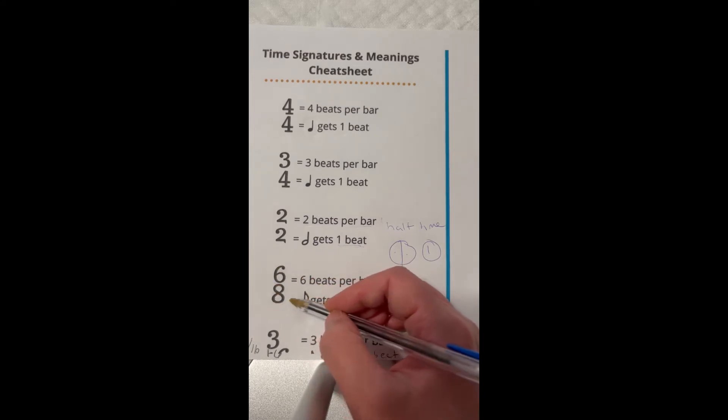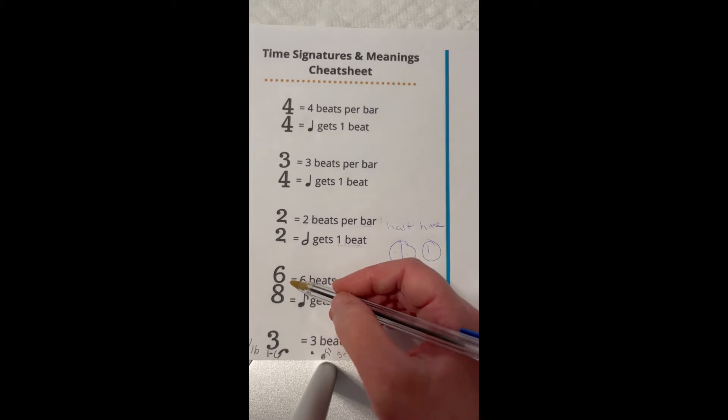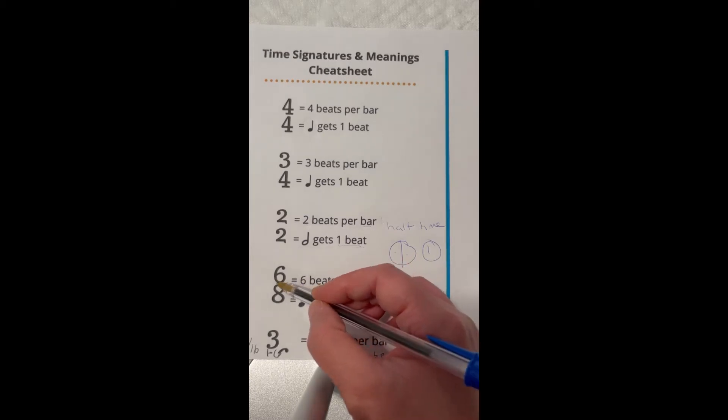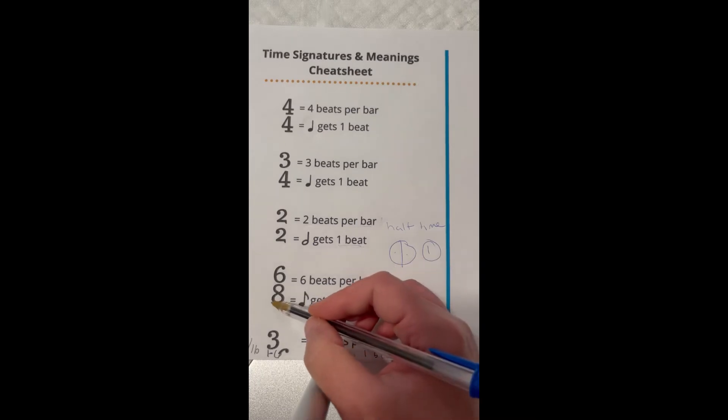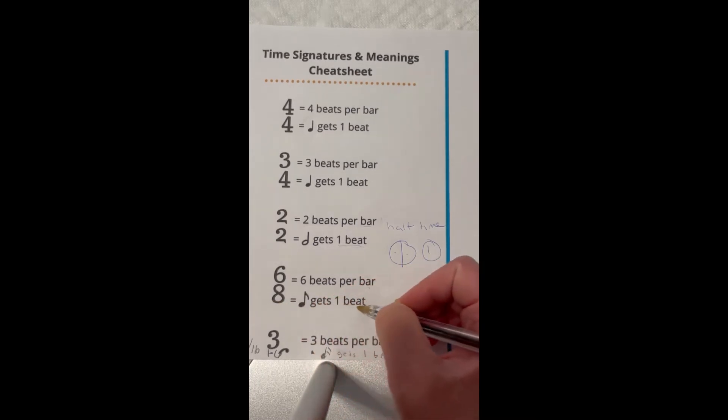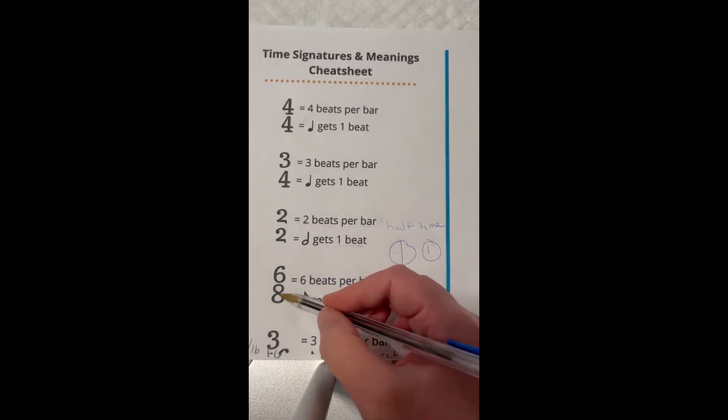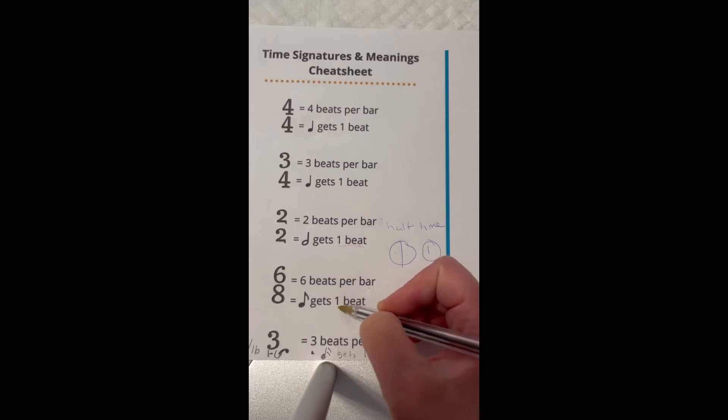Here is six-eight time, which we use a lot to double our values. So in this case, six will be six beats per bar, and an eighth note will get one beat. So in this case, this eight will represent a regular eighth note - that's your eighth note. It'll get one beat in this case, just count it as one.